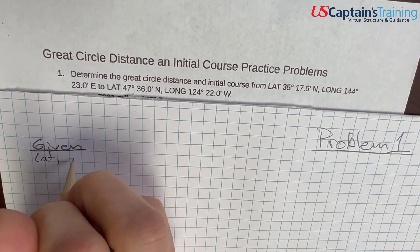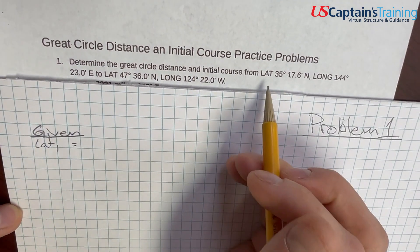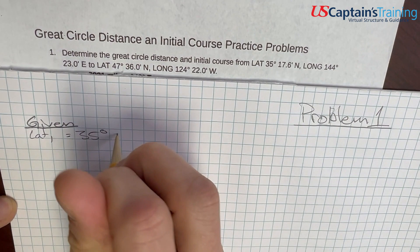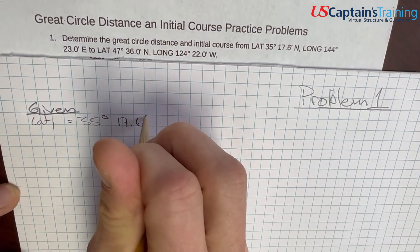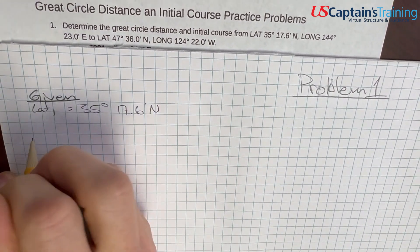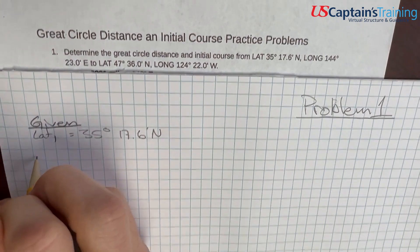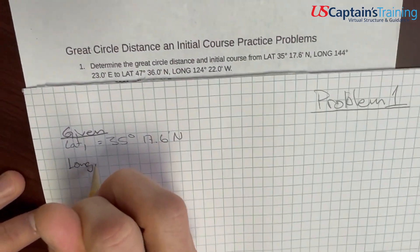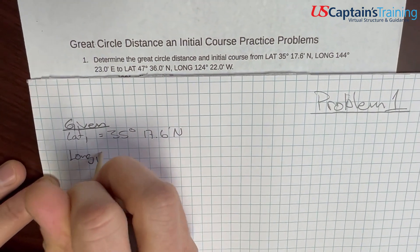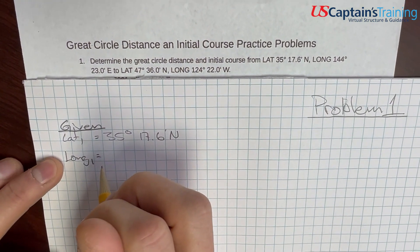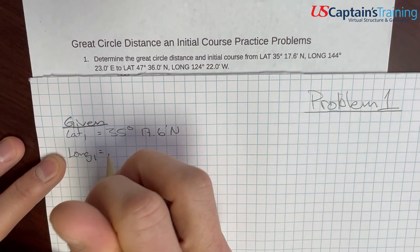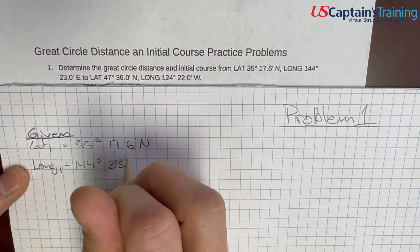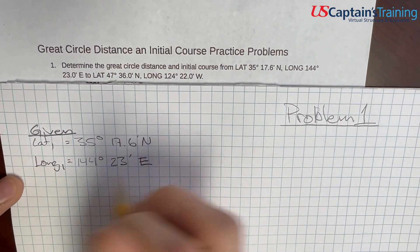So, lat 1 equals 35 degrees, 17.6 minutes north, and I leave a space here because we are going to have to convert all of these to only degrees. So, longitude 1, 144 degrees, 23 minutes east.